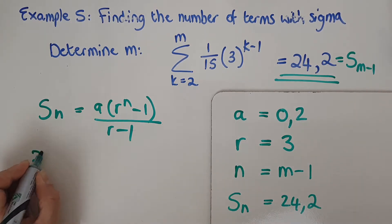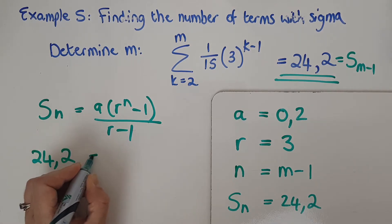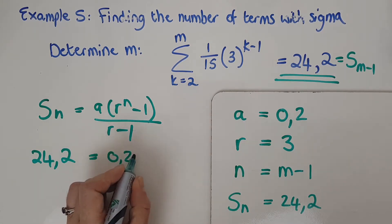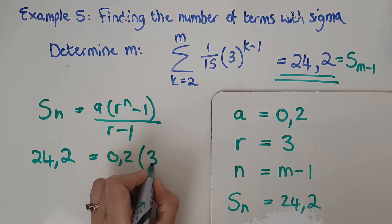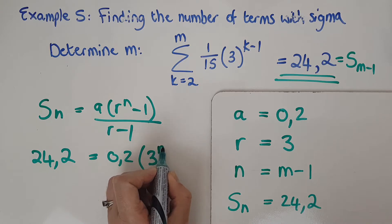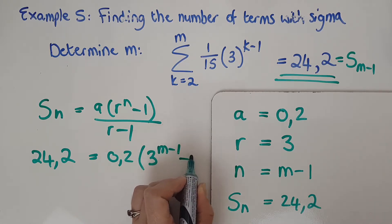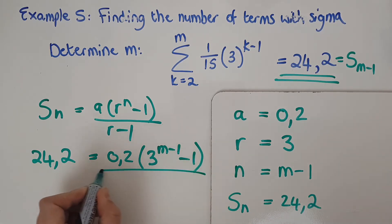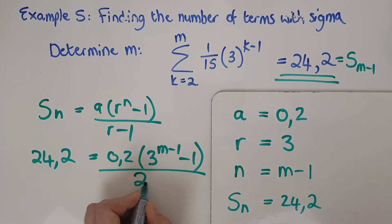My Sn I had as the 24 comma 2. A I got 0 comma 2. r was 3. Now here comes the bit that's awkward. My n is m minus 1. So m minus 1 and then I'm minusing 1 there over 3 minus 1. So that's 2.